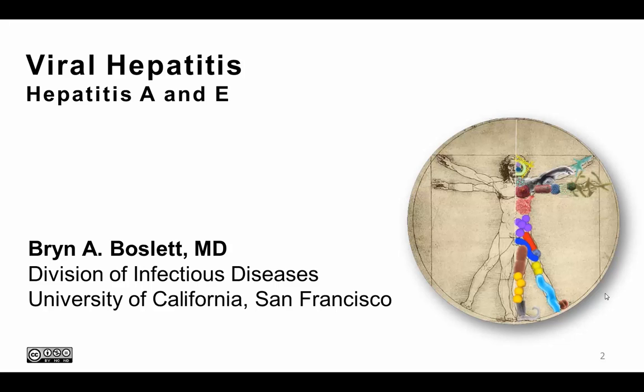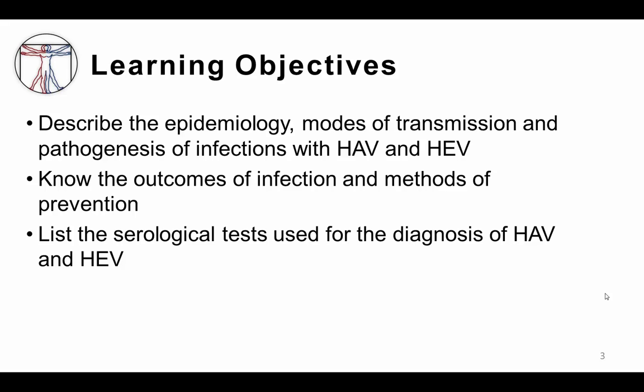By the end of this session you should be able to describe the epidemiology, modes of transmission, and pathogenesis of infections with hepatitis A and E virus. You should know the outcomes of infection and the methods of prevention, and you should be able to list the serological tests used for the diagnosis of hepatitis A and hepatitis E infections.